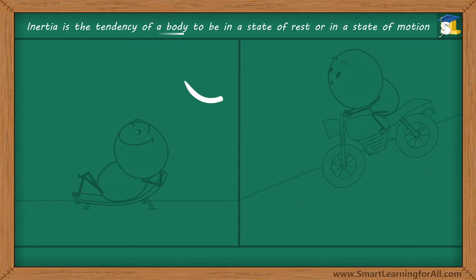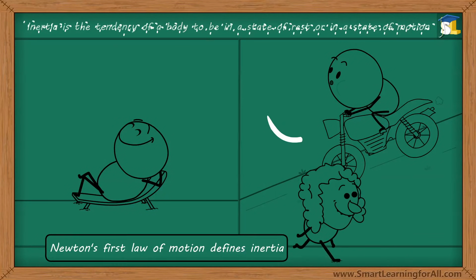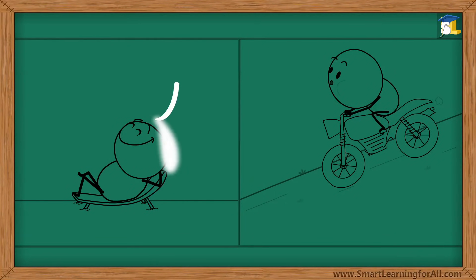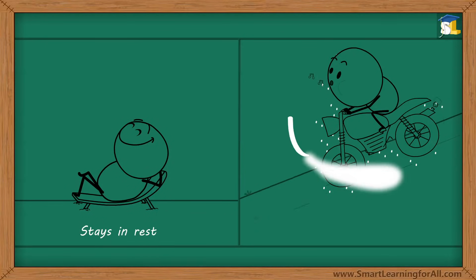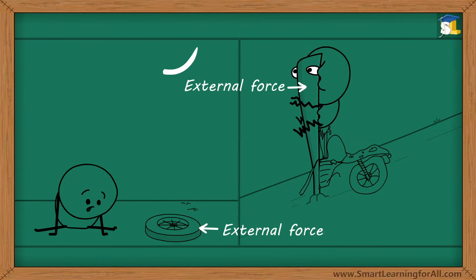Inertia is the tendency of a body to be in a state of rest or in a state of motion. Newton's first law of motion defines inertia. It states that a body in rest stays in rest and a body in motion stays in motion unless it is acted upon by an external force.